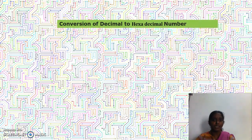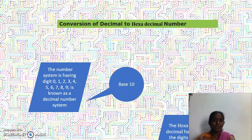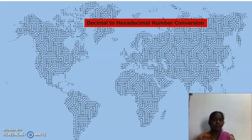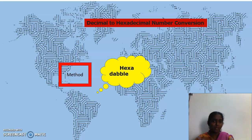Next, conversion of decimal to hexadecimal number. The decimal number system has digits from 0 to 9, with base 10. The hexadecimal number system has digits from 0 to 9 and letters from A to F — totally 16 digits, base 16. The method used for decimal to hexadecimal conversion is called the hexadecimal division method. As a reminder: decimal to binary uses the double-and-divide method, decimal to octal uses the octal division method, and decimal to hexadecimal uses the hexadecimal division method — where the decimal number is divided by 16.